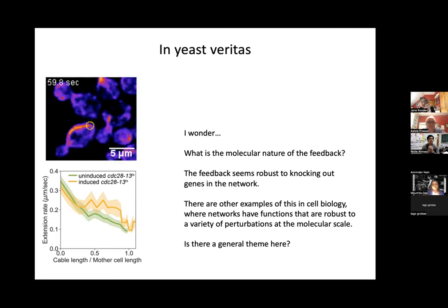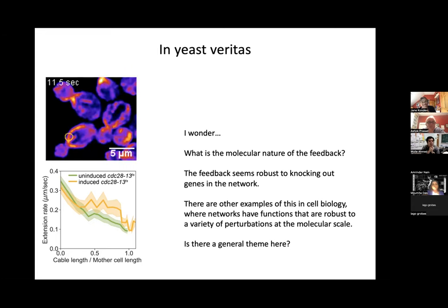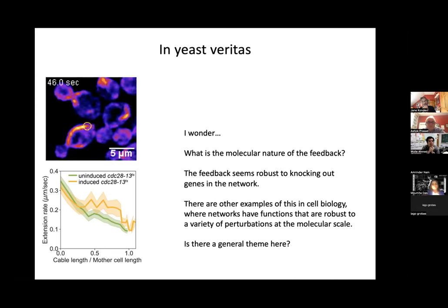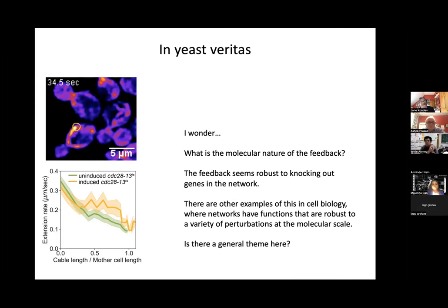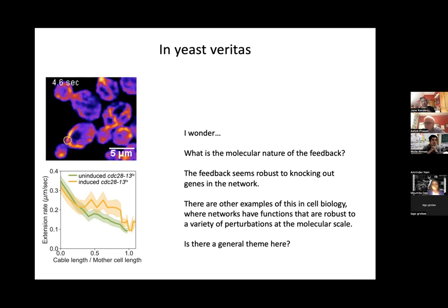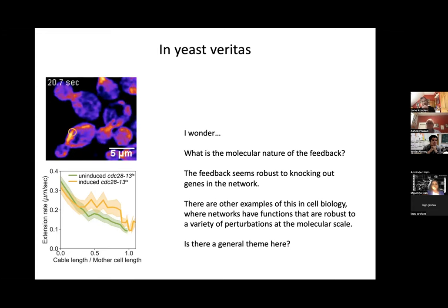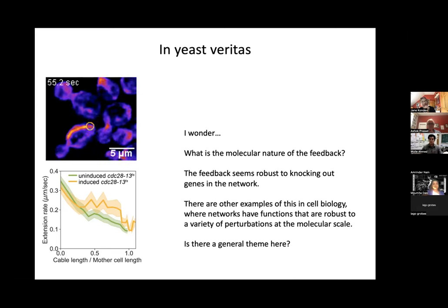We do actually think we know where the feedback comes from. The key insight is thinking about what these cables actually are structurally. When you look at cables in EM, they consist of a bunch of smaller filaments — about 500 nanometers in length — that are cross-linked. Similar composite filamentous structures exist in other systems: filopodia, actin comet tails behind Listeria. So the idea is that feedback might simply come from geometry: cables are assembled at the bud neck through formin proteins that spit out filaments.